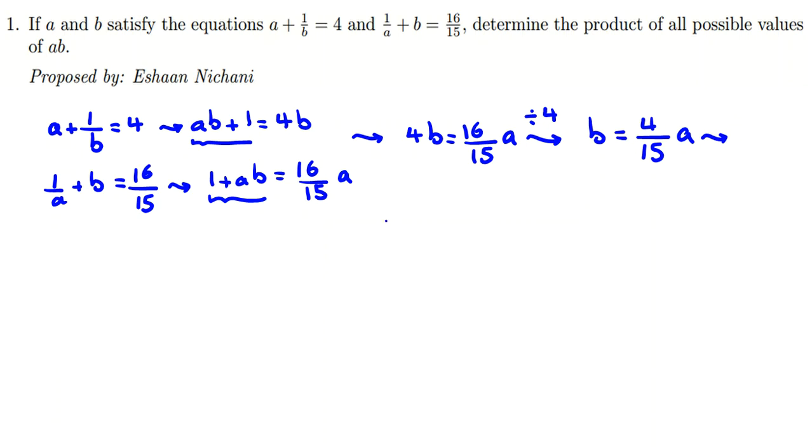15b equals 4a. Now we have this. We found a relationship between a and b, so we can replace in one of them, find a, and then find b. You can use this one, b equals 4 over 15 a.